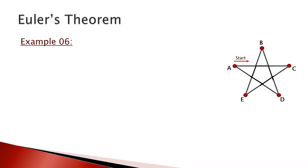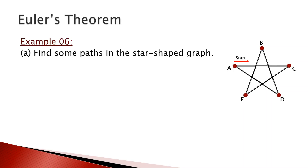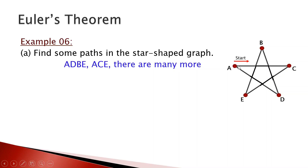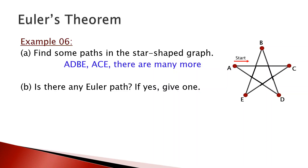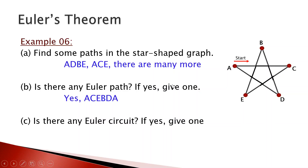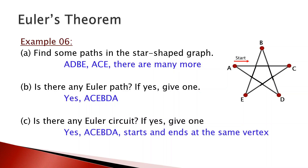For a star-shaped graph, some paths starting at A include: A–B–A–D–B–E, or A–C–A, among many others. Is there an Euler path? Yes — one example is A–C–E–B–D–A. Is there an Euler circuit? Yes — the path A–C–E–B–D–A already starts and ends at A and covers all edges exactly once, so it is both an Euler path and an Euler circuit.